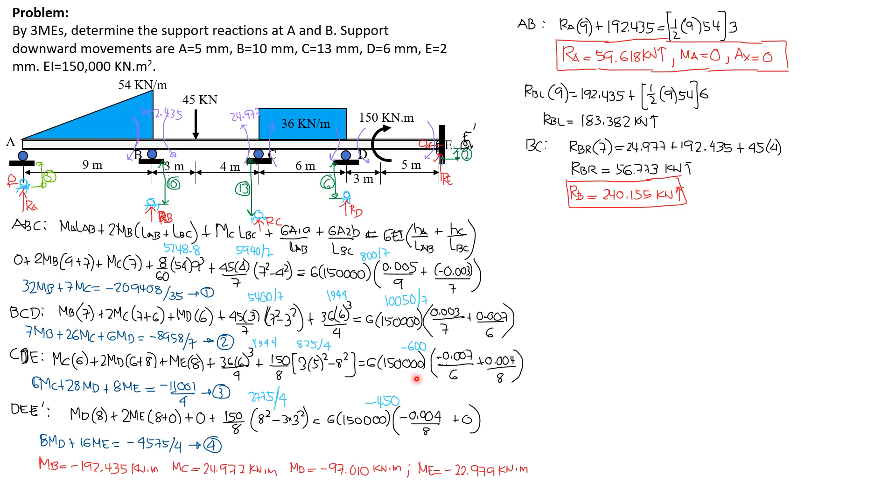The value is 825 over 4, equals 6EI, 150,000 quantity. The reference is D, C is below D by 7mm, so negative 0.007 over 6. E is above D by 4mm, 6 minus 2, so positive 0.004 over length of DE, which is 8, and the value is negative 600. Combining the constants and simplifying, we have 6MC plus 28MD plus 8ME equals negative 11,001 over 4. Call that equation 3.